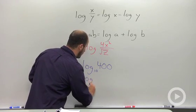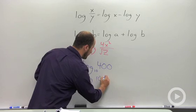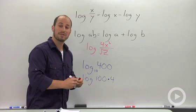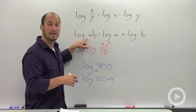So this then is equal to log of 100 times 4. We're multiplying, so that means we can use our addition property and split it up.